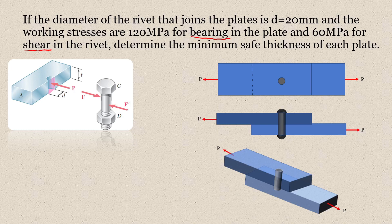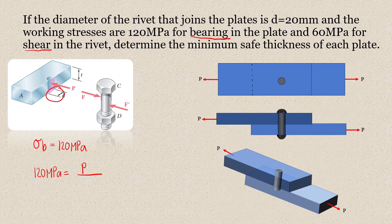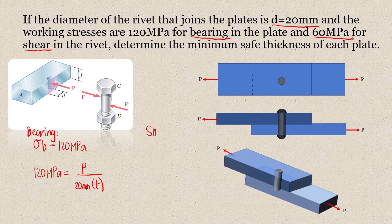First, the consideration for bearing. The bearing stress of the plate is limited to 120 MPa. Stress is equal to force over area, but our area here will be the diameter times the thickness of the plate. So 120 MPa equals the applied force divided by the bearing area, which is the diameter of the rivet multiplied by the thickness — that is 20 mm times t. We have two unknowns so we need two equations. The second equation comes from our consideration for shear, where the shear stress tau equals the shear force divided by the shear area A_V.